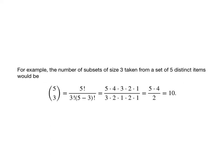Let's look at an example. The number of subsets of size 3 taken from a set of 5 distinct items would be 5 choose 3, 5 factorial over 3 factorial times 5 minus 3 factorial.